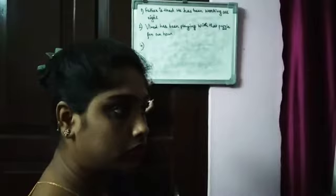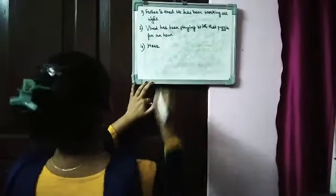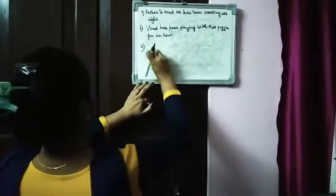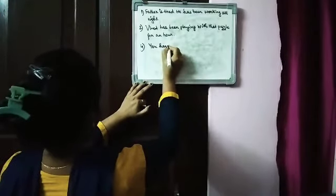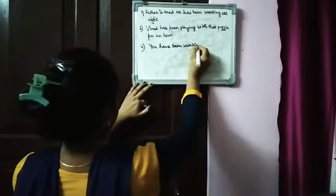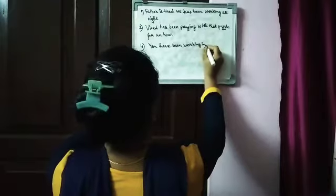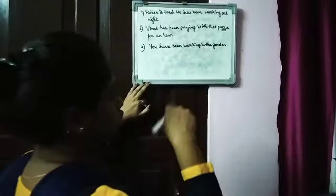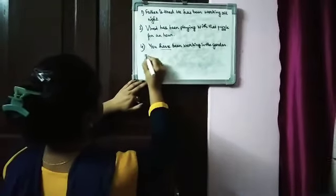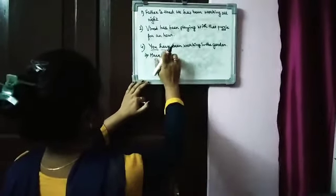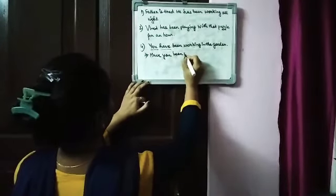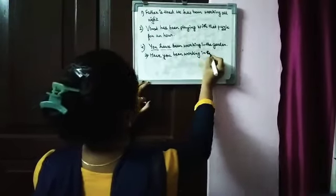Begin with 'have'. That means you have to question this in that way. We have to start with have. Now if we question this, then how we are supposed to: we have our auxiliary, then our subject 'you', then the remaining - been working in the garden. When we make questions, always the auxiliary comes first.